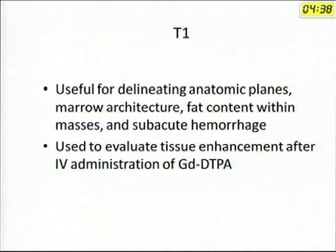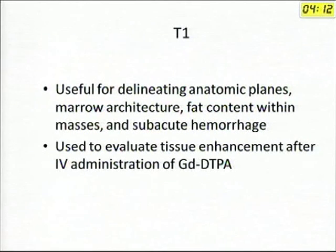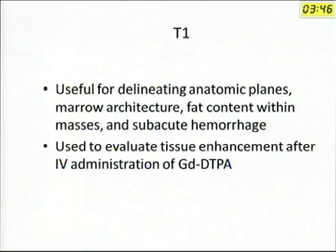Whenever you get an MRI done, an orthopedic resident can get perplexed by the number of films. In MRI we do different sequences. The two most basic sequences that everybody should know: one is T1, the other is T2. T1 is good for anatomy. Whenever we want to look at marrow or fat content within masses, we do T1. Whenever you do a contrast-enhanced scan — for tumor, synovitis, or synovial inflammation — it is a T1 sequence. Post-contrast sequences are T1, and anatomy-oriented sequences are T1.